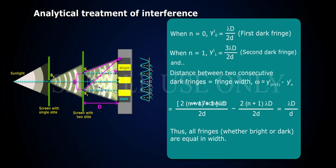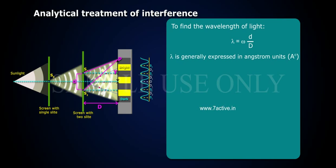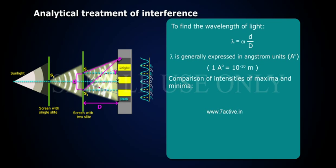Thus all fringes, whether bright or dark, are equal in width. To find the wavelength of light: lambda equals omega d by D. Lambda is generally expressed in angstrom units, where 1 angstrom equals 10 to the power of minus 10 meters.